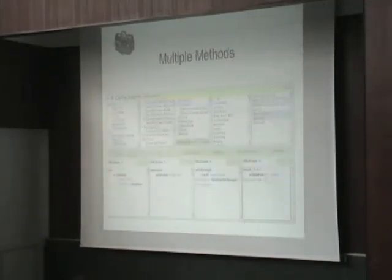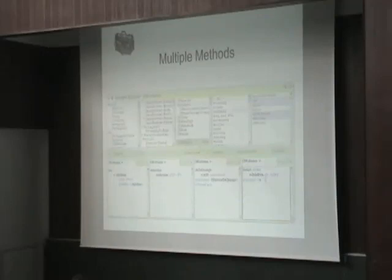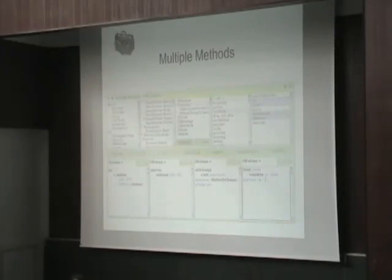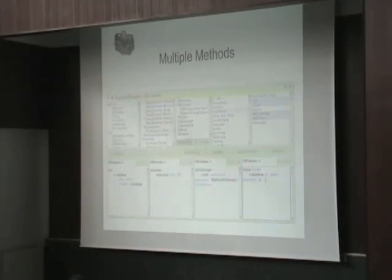Another way to create context is to be able to edit by modifying more than one method in the same browser. With that browser, I can open more than one method at once. There is a visualization showing four methods — I can select and compare them, and I can also edit all the methods at the same time and compile all of them together. This is another way to represent context.